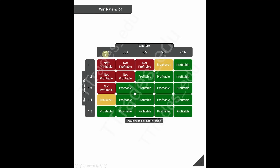This table shows what win rate paired with what fixed risk to reward equals profitability. For example, if you have a 20% win rate and a 1:1 risk to reward, it's not profitable. However, if you have a 1:2 risk to reward with a 40% win rate, then you are profitable. This table only works out if you have the same risk per trade.